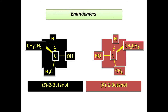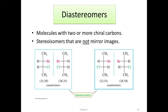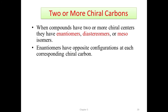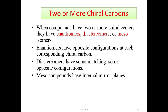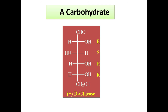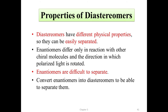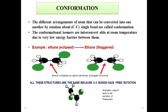Enantiomers: a carbon atom with four different groups is called a chiral center. For example, (S)-2-butanol and (R)-2-butanol are mirror images of each other — enantiomers. Diastereomers are stereoisomers with two or more chiral carbons that are not mirror images of each other. When a compound has two or more chiral carbons, enantiomers, diastereomers, and meso compounds are possible. Diastereomers have different physical properties and can be separated more easily than enantiomers. The maximum number of stereoisomers is 2ⁿ, where n is the number of chiral carbons.